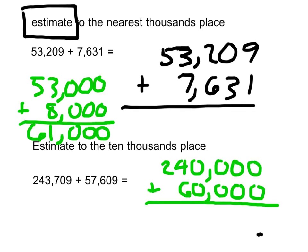All right, we have the answer to that first one there, our estimate being 61,000, where you had to round 53,209 to the nearest thousands place, which is 53,000. 7,631 nearest thousands place is 8,000. For our bottom one, that was 243,709 rounds to 240,000. That was nearest ten thousands place. 57,609 nearest ten thousands place is 60,000. And if we add those together, we're going to get 300,000. And so that is our estimate.